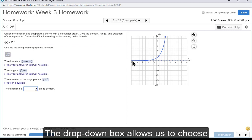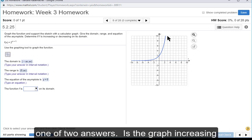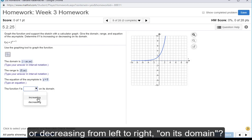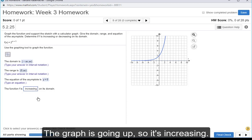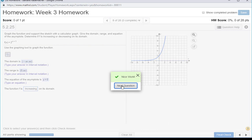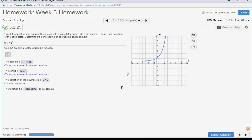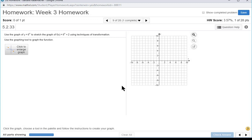Now, we're going to choose whether or not the graph is increasing or decreasing on its entire domain. From left to right, the graph is increasing, getting higher. So I choose increasing. Now let's go to the next question.